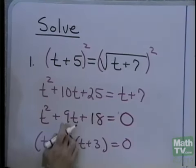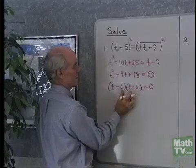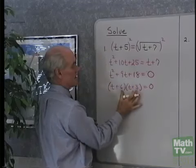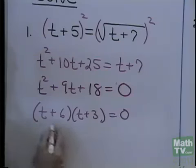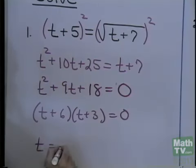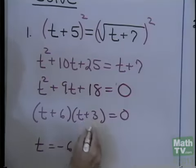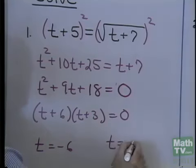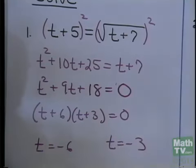Now I'll factor it into t plus 6 times t plus 3 equals 0. Let's see: 6t plus 3t is 9t, and 6 times 3 is 18. I set this factor equal to 0 and get t equals negative 6. I set this factor equal to 0 and get t equals negative 3.